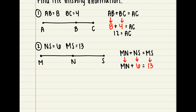Think about this like solving equations — MN is like my X. I want to get it by itself. On the left side with MN there's the plus 6, so I need to subtract 6 from both sides. The plus 6 and minus 6 cancel out, and I'm left with MN equals 13 minus 6, which gives me 7. This was a problem where I gave you NS (a part) and MS (the whole), and we had to find the other part MN, which is 7.